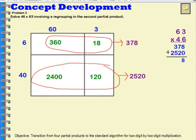Now I just add those together. 8 plus 0 is 8. 7 plus 2 is 9. 5 plus 3 is 8. 2 plus 0 is 2. So my product is 2,898.